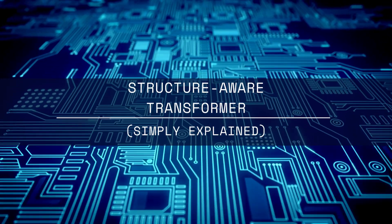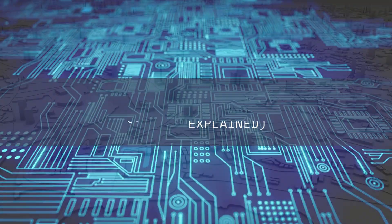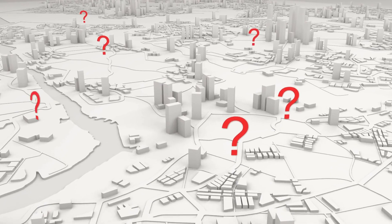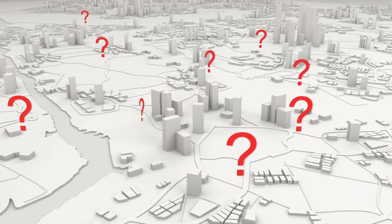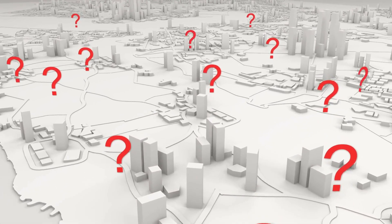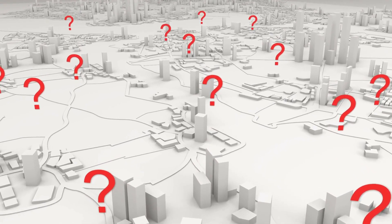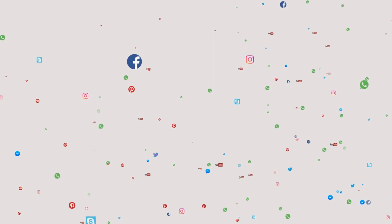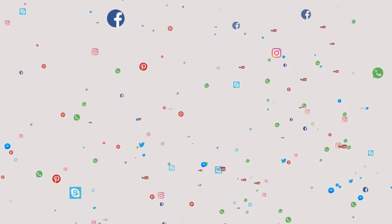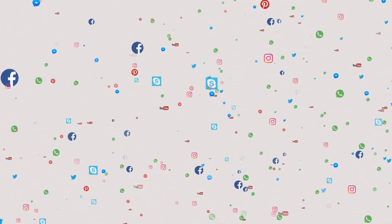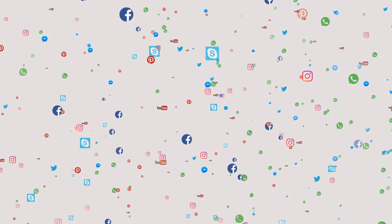To begin with an analogy, imagine a city map with various locations like houses, parks and shops. The roads connecting these locations form a network, similar to how friends on Facebook or followers on Twitter are connected. In the world of computer science, we call these networks graphs.